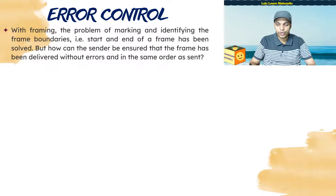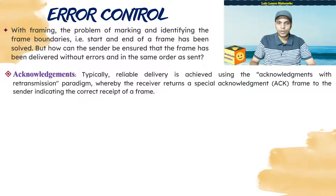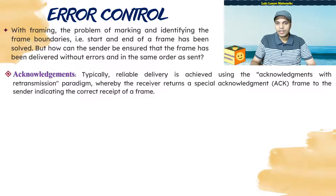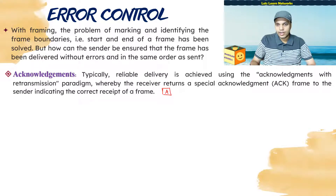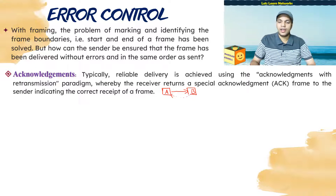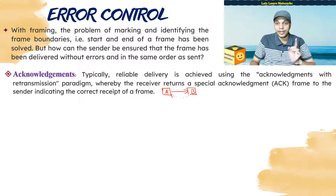The first is acknowledgements. Reliable delivery is achieved using the acknowledgement-with-retransmission paradigm. Whenever the receiver sends a special acknowledgement frame to the sender indicating correct receipt of a frame — in simple terms, if A is the sender and has sent a frame to B, then B must send an acknowledgement back to A confirming receipt. Only when B sends the acknowledgement can A be assured that the frame was delivered without any errors.